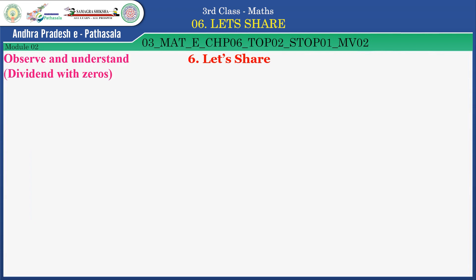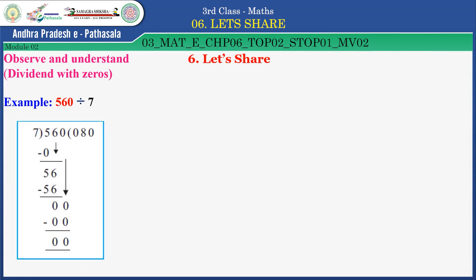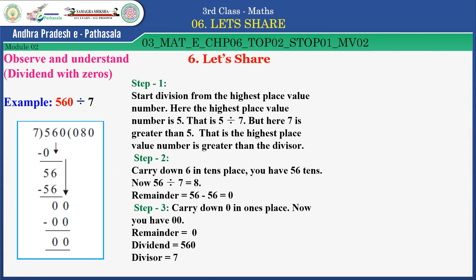Children, here you have to observe and understand dividend with zeros. Look at this example: 560 divided by 7. Let us see it stepwise. Step 1: Start division from the highest place value number. Here, the highest place value number is 5. That is, 5 divided by 7. But here, 7 is greater than 5 — the divisor is greater than the highest place value number.